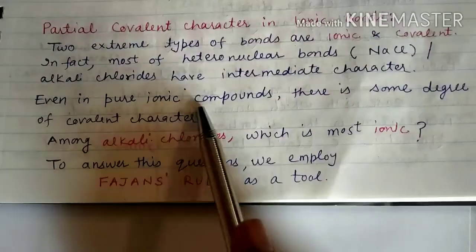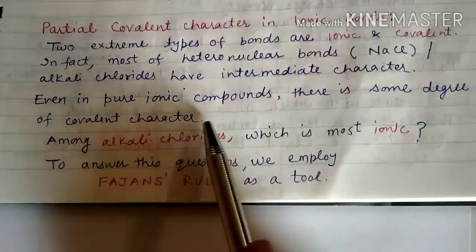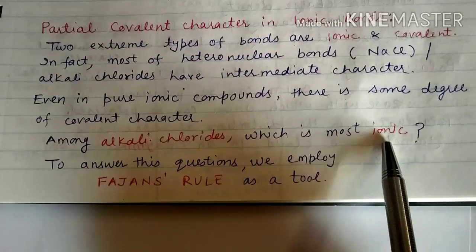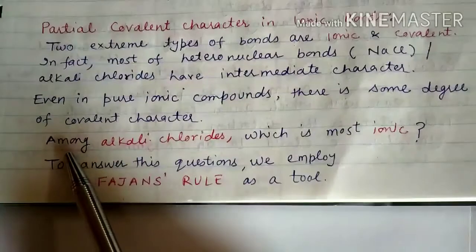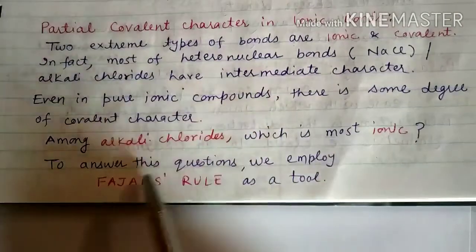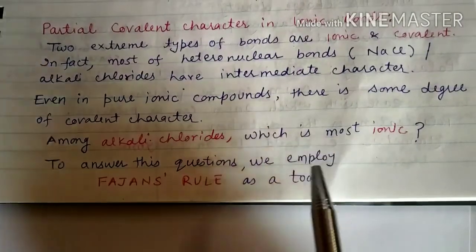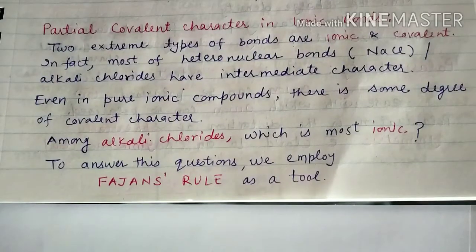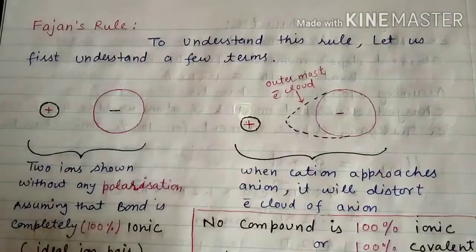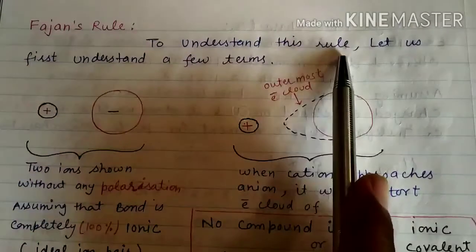Even in pure ionic compounds there is some degree of covalent character. Among alkali chlorides, which is most ionic? To answer this question we will apply Fajan's Rule as a tool. So first of all we shall discuss Fajan's Rule.